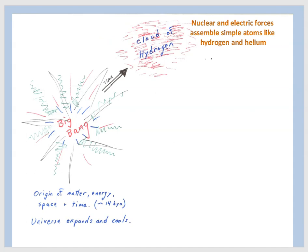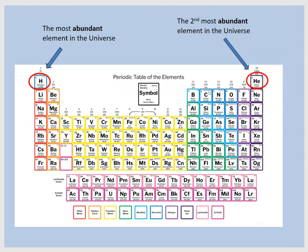Several of the forces of nature, the nuclear forces and electrical forces, assembled simple atoms like hydrogen and helium. So in the beginning, the only elements really present in the early universe were hydrogen and helium with small amounts of lithium.